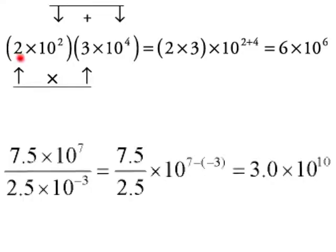We're going to say 2 times 3 is 6, and 10 to the 2nd times 10 to the 4th is 10 to the 6th.